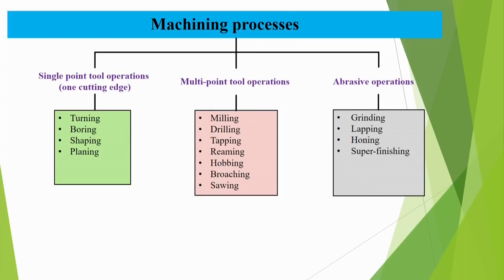Machining processes can be classified into single point tool operations, in which there is one cutting edge effectively cutting. For example, in a lathe tool there is a cutting edge that is the main cutting edge (primary); it is mainly cutting the material, although there is a very small participation of the secondary cutting edge as well. In most lathe machine operations both edges are participating, but the primary operation is done by the main edge. So we can say this is a single point tool operation.